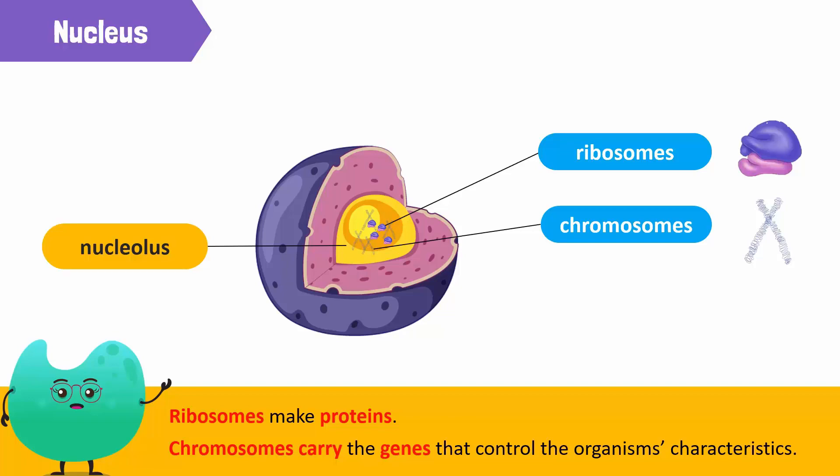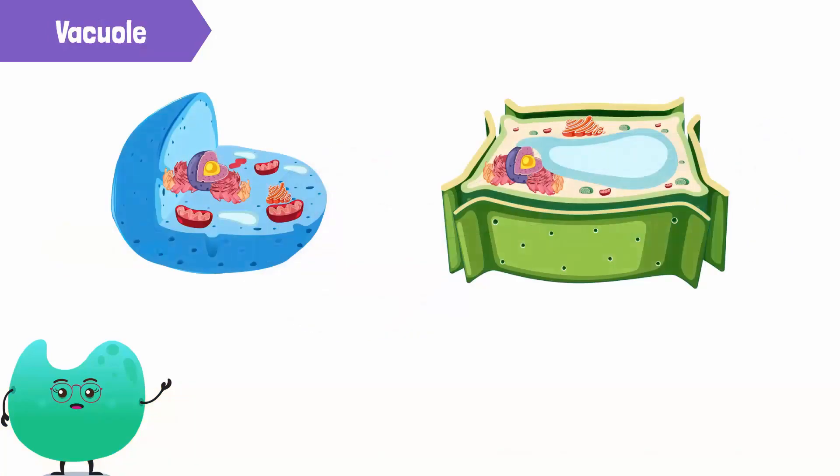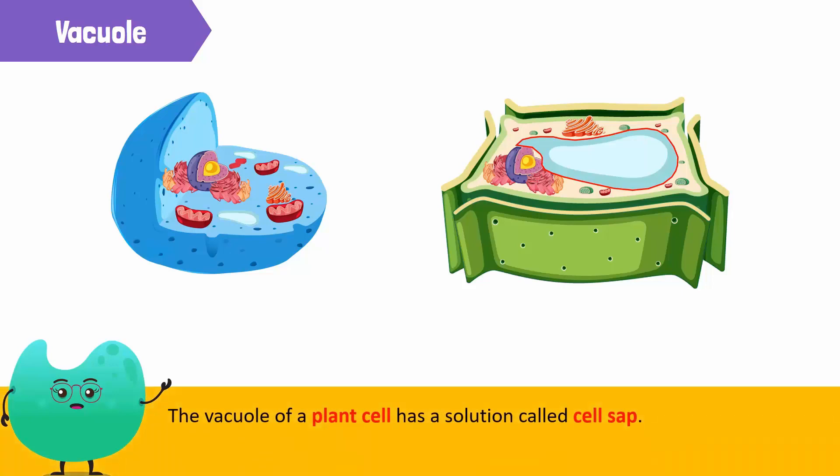Next, let's talk about vacuoles. In a plant cell, the vacuole is a large structure that occupies most of the cell. It contains a solution of sugar and water called cell sap. However, in an animal cell, the vacuoles look like air bubbles. They store the nutrients for the cell and waste products.